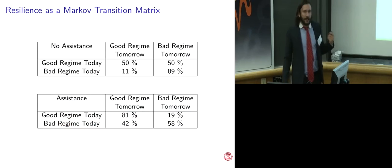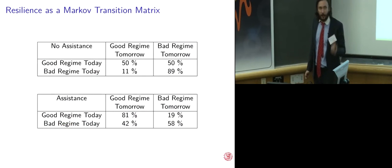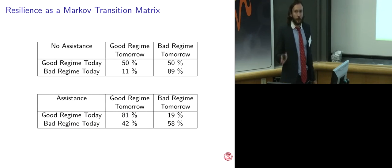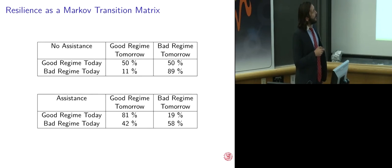What this enables us to do, once we can infer which regime a household is in, we can then determine whether or not there's anything we can do to get these households out of that regime or improve their state. This is something called a Markov transition matrix. In essence, it's a mathy term, but essentially all it means is what's the probability, given that you're in a good place today, of being in a good place tomorrow versus moving to that bad place. So if we look at households who are not receiving any government assistance, what we see is if you're in a good place today, you have about a 50-50 chance of being in that same good place tomorrow or falling back into the bad place. If you're in a bad place today, you've got an 89% chance of staying in that bad place. That is classic poverty trap. That means that once you're there, you're stuck.